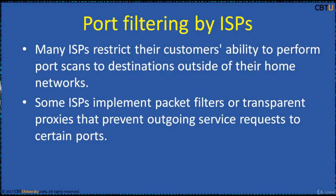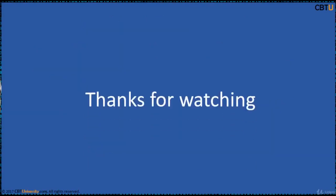Many internet service providers restrict the customer's ability to perform port scans to destinations outside of their home networks. This is usually covered in the terms of service or acceptable use policy to which a customer must agree. Some ISPs implement packet filters or transparent proxies that prevent outgoing service requests to certain ports. For example, if an ISP provides a transparent HTTP proxy on port 80, port scans of any address will appear to have port 80 open, regardless of the target host's actual configuration. Thank you for watching.